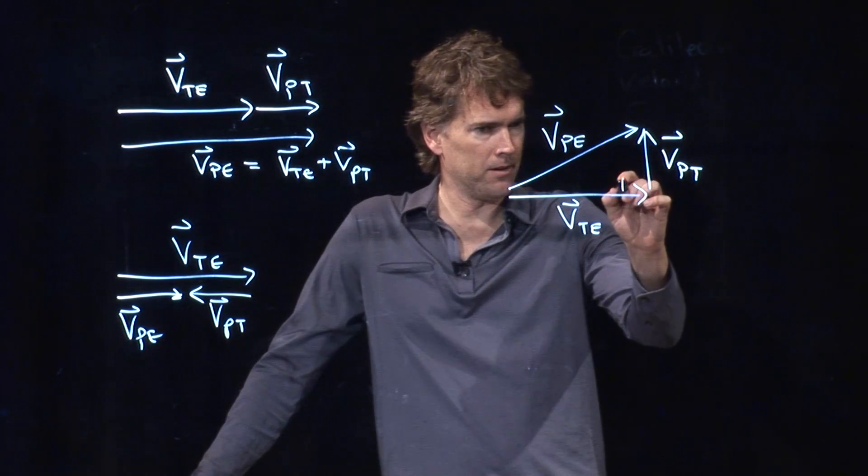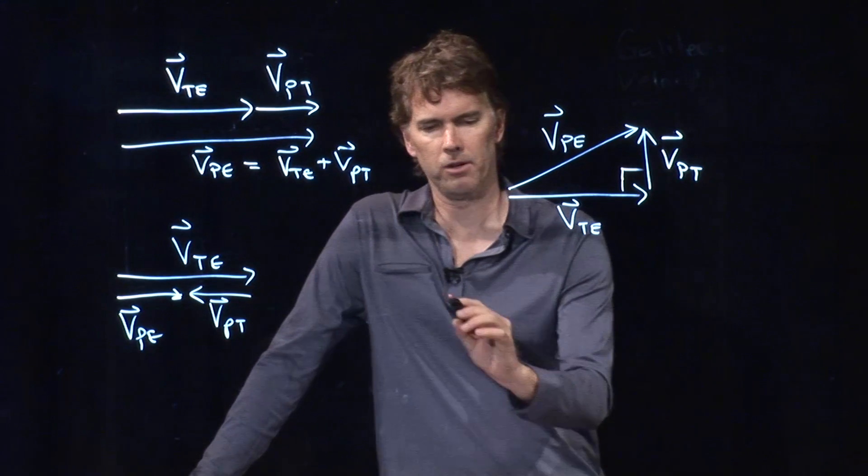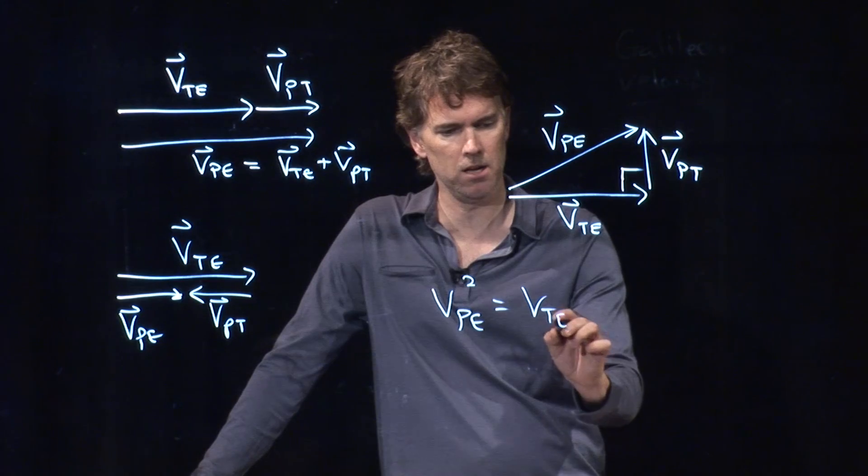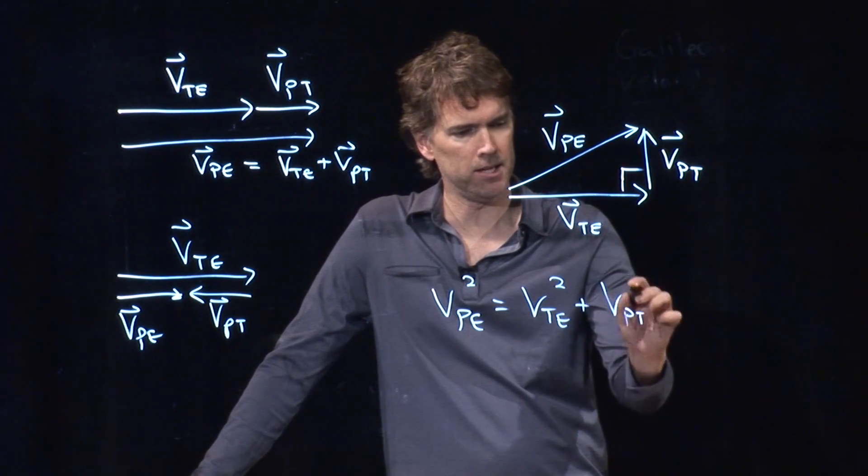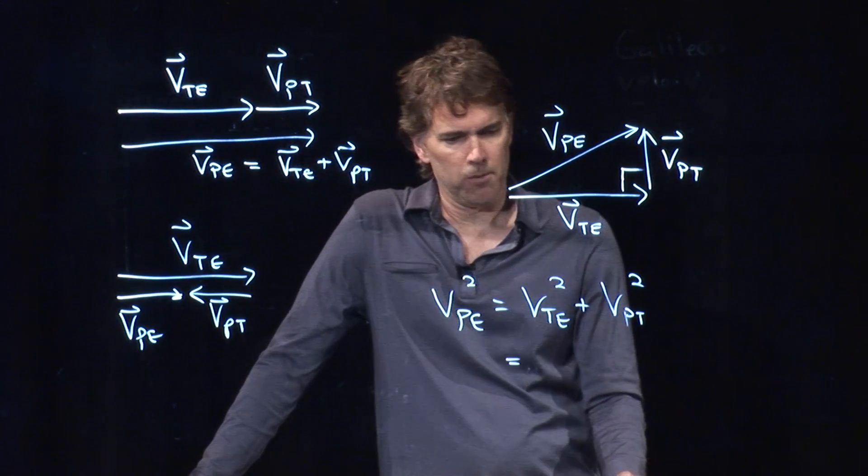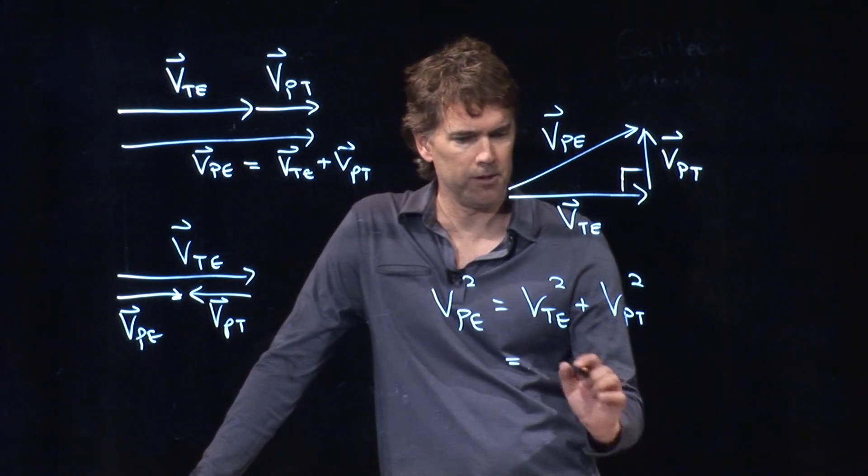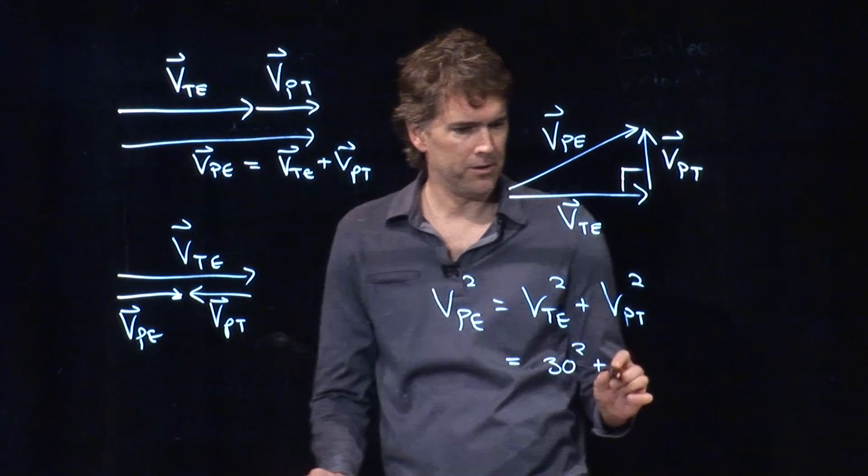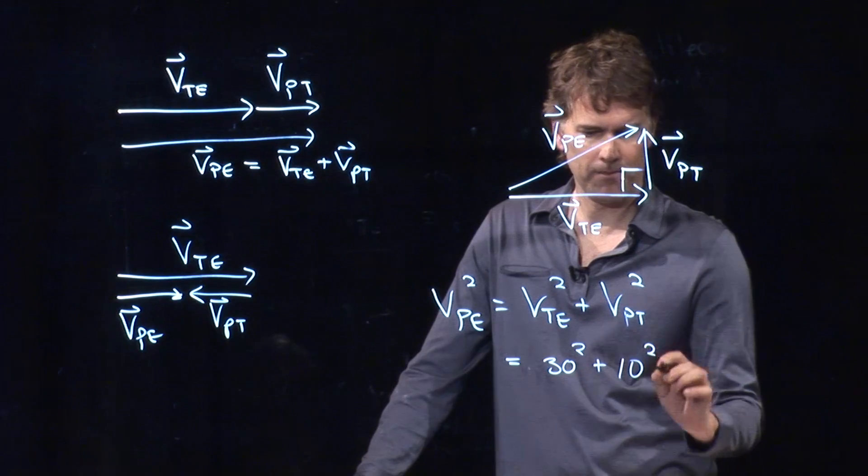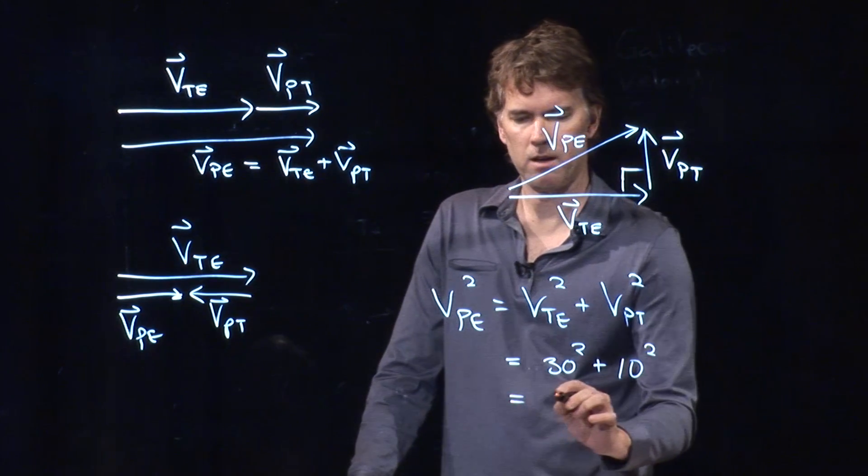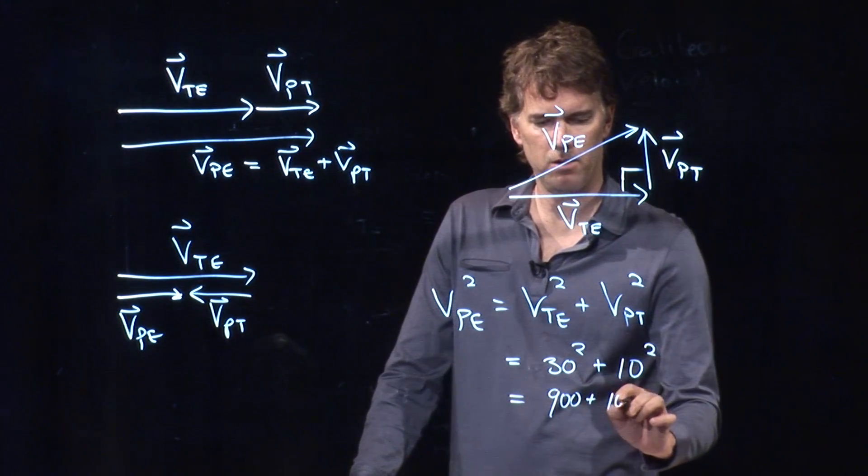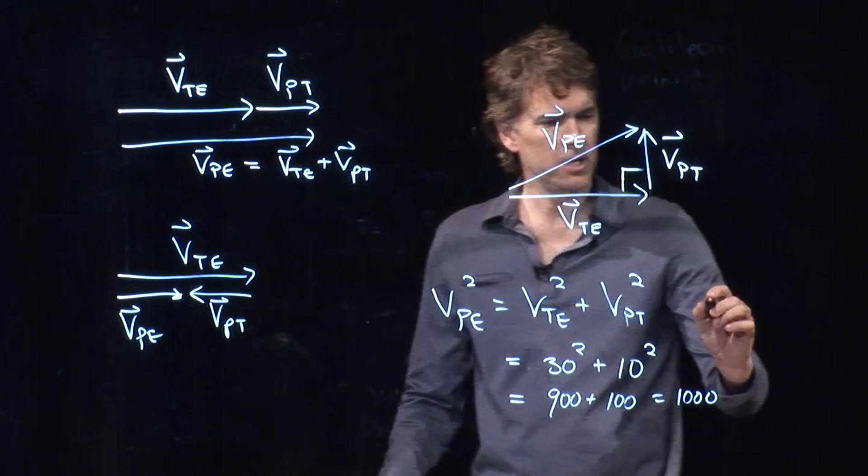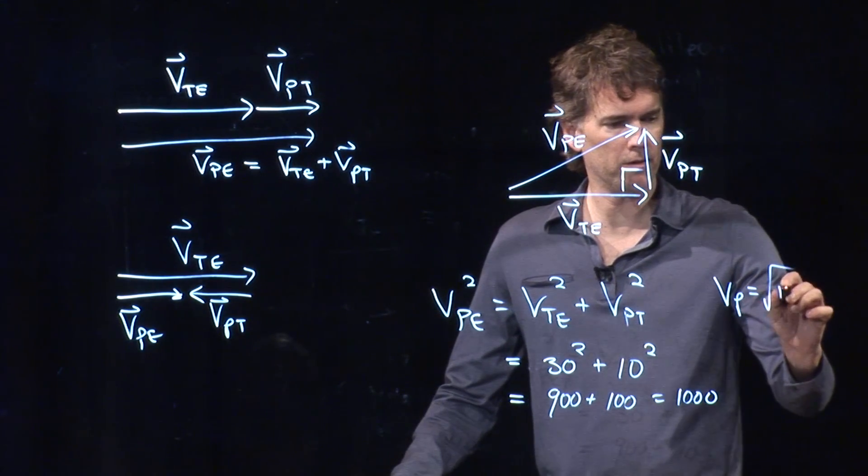And in this case, if this is the right angle, now we can solve this. VPE squared equals VTE squared plus VPT squared. And what did we say it was? The train relative to the Earth was 30 MPH. The person relative to the train was 10 MPH. So we get 900 plus 100, which is 1,000. And so VPE equals the square root of 1,000.